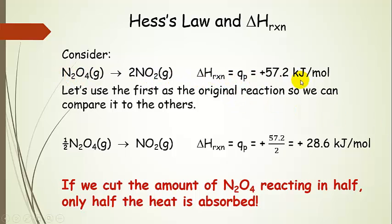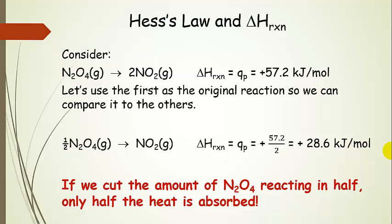Using the first reaction as something to compare to, we see that if we have dinitrogen tetraoxide and we're making two nitrogen dioxides, that change in enthalpy for the reaction — which is the same as the heat at constant pressure — is plus 57.2 kilojoules per mole. That's endothermic. In the second reaction, all the coefficients have been divided by two, so we have half as much. When we look at delta H reaction, we see that this change in enthalpy is just the original divided by two, just like we did with the coefficients.